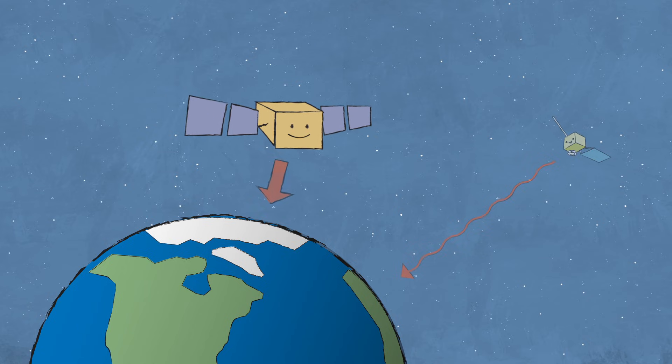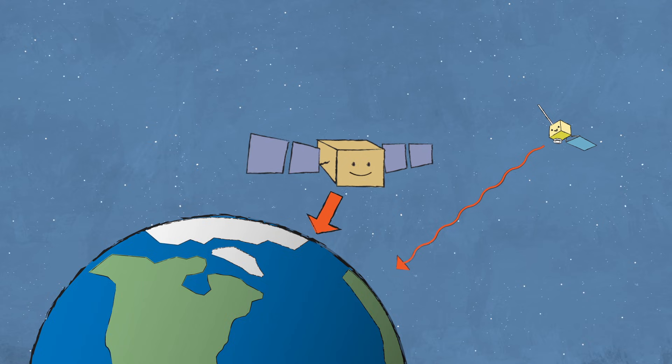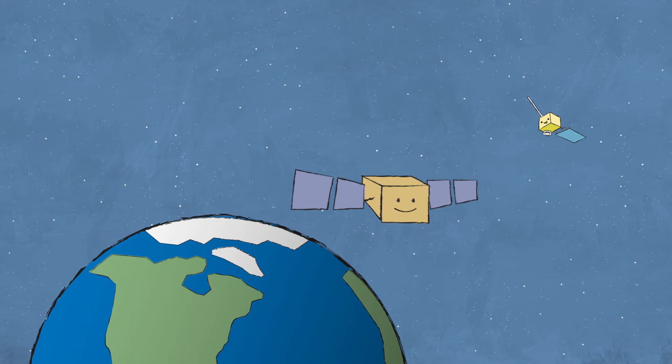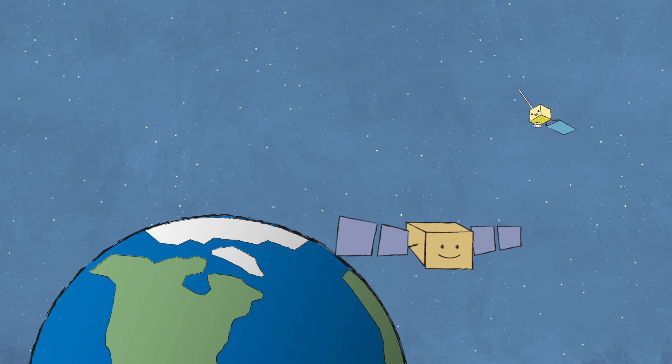Gravity is stronger the closer you are to Earth. And satellites that orbit close to Earth must travel at very high speeds to stay in orbit.